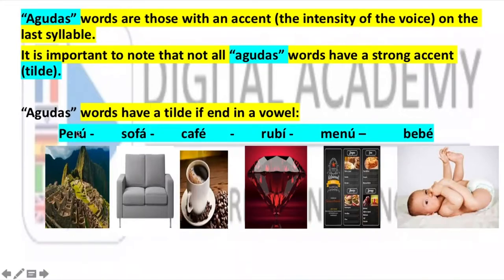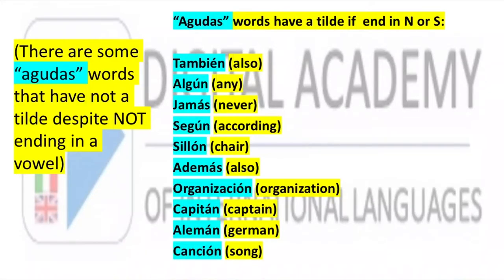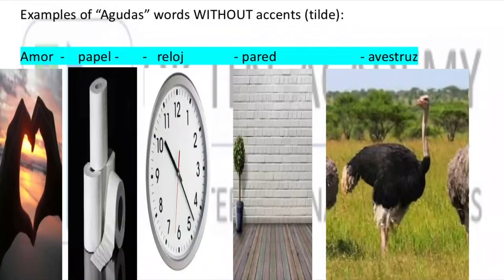It is important to note that not all agudas words carry a written accent mark, or tilde. Here we see examples: Perú, sofá, café, rubí, menú, bebé — these have the accent on the last syllable. Agudas words carry a tilde if they end in a vowel, N, or S. For example: también, algún, jamás, según, sillón, además, organización, capitán, alemán, canción. But there are agudas words without a tilde — for example: amor, papel, reloj, pared, avestruz.